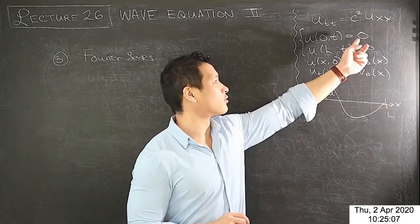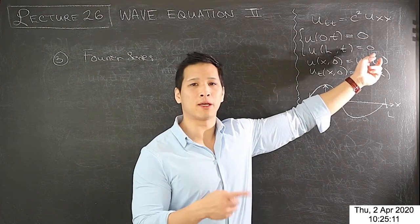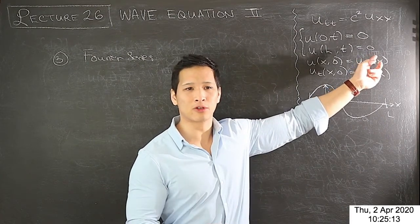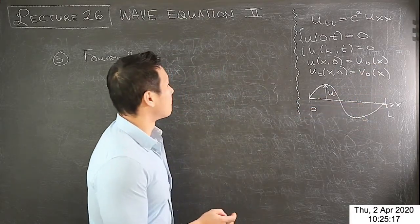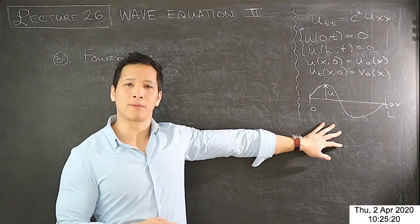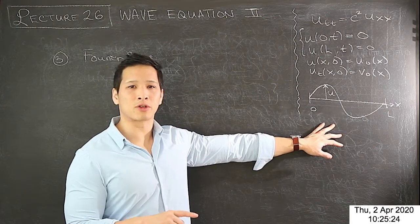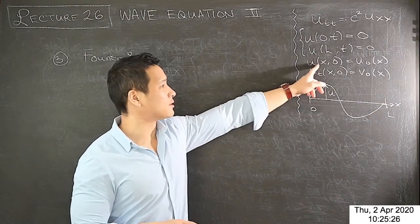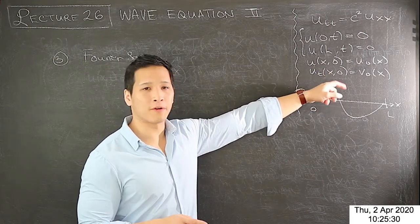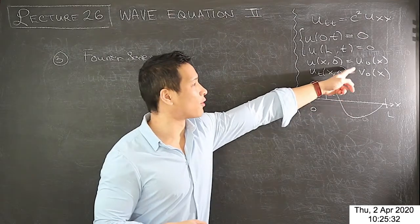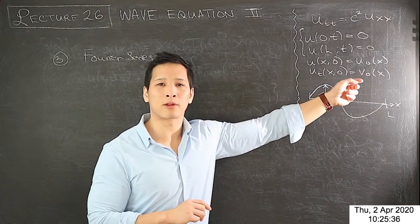Remember that you always check whether the boundary conditions are zero or non-zero. If non-zero, you may need to obtain a steady-state solution as in the heat equation. We then applied separation of variables and the boundary conditions, and were about to develop the coefficients — the a_n and b_n — for the two initial conditions in time. That's where we ended last lecture.